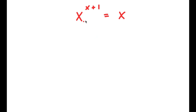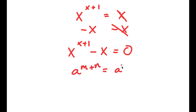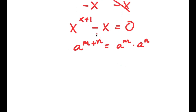In this problem I have x to the power of x plus 1 is equal to x. To solve this, I'm going to start by subtracting x on both sides, so I'm left with x to the power of x plus 1 minus x is equal to 0. Using the property a to the power of m plus n equals a to the power of m times a to the power of n, x to the power of x plus 1 becomes x to the power of x times x to the power of 1, minus x equals 0.